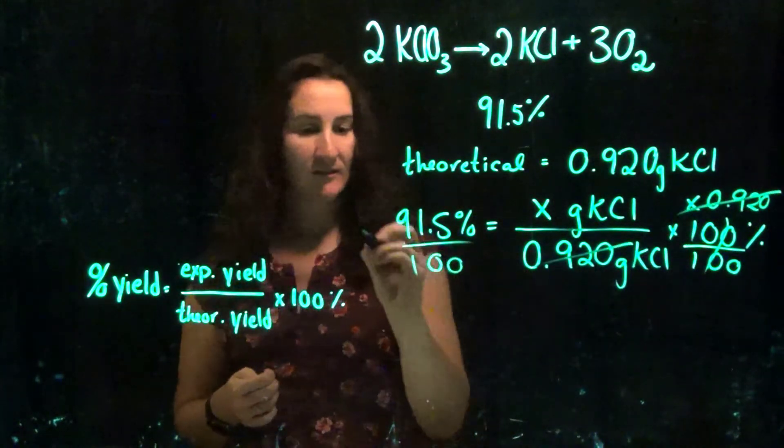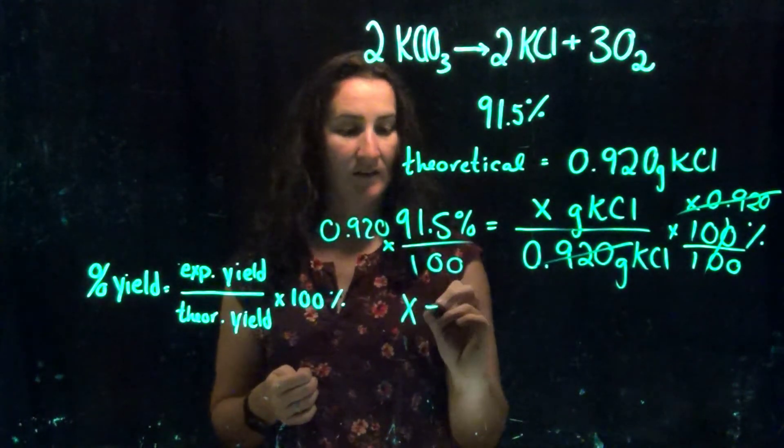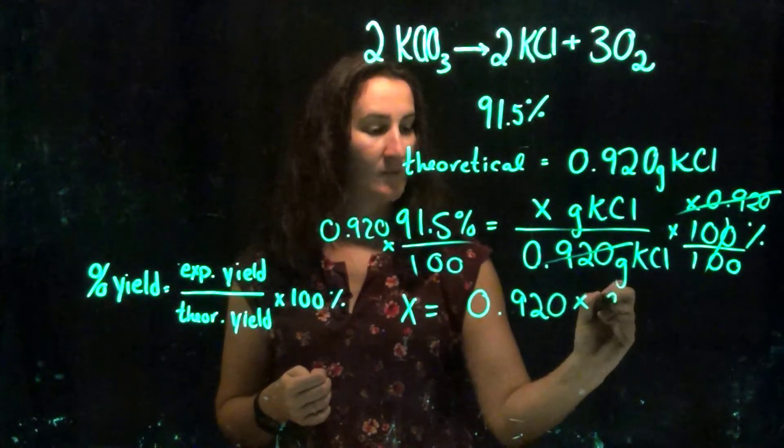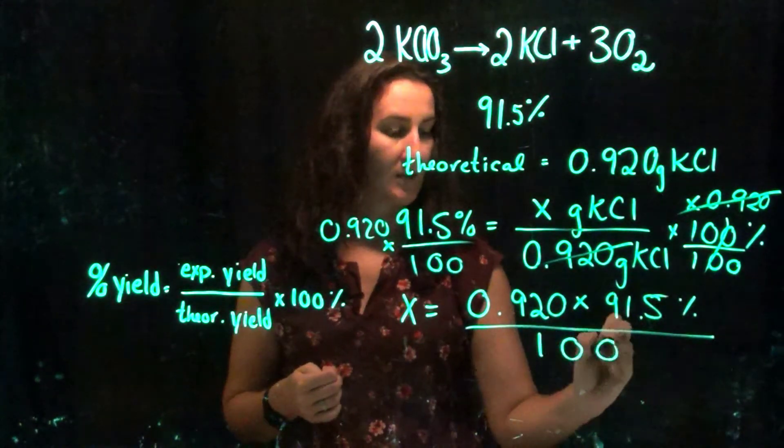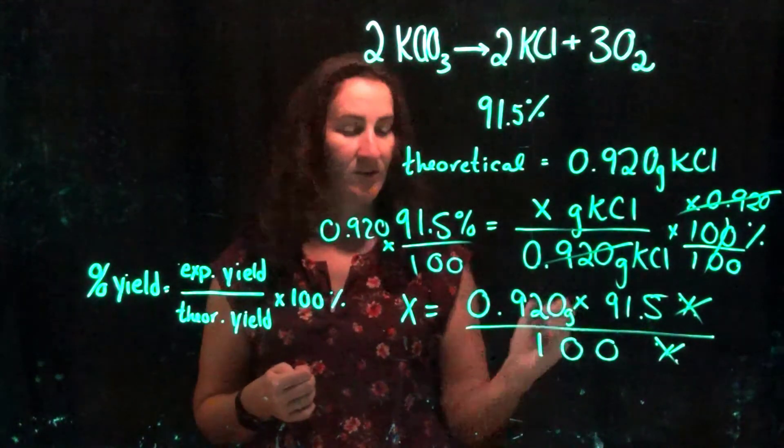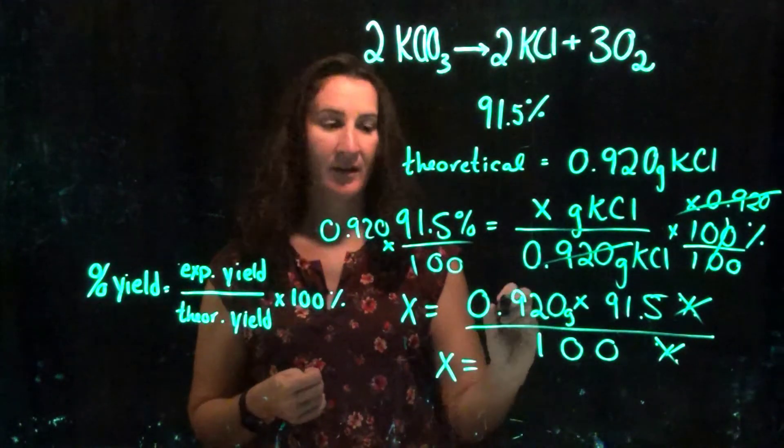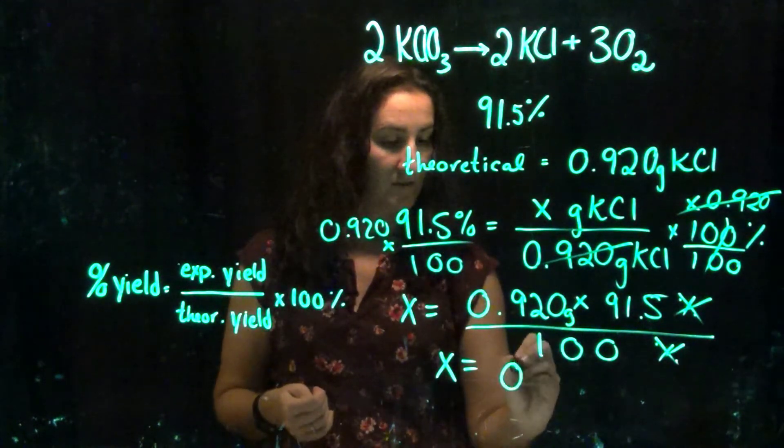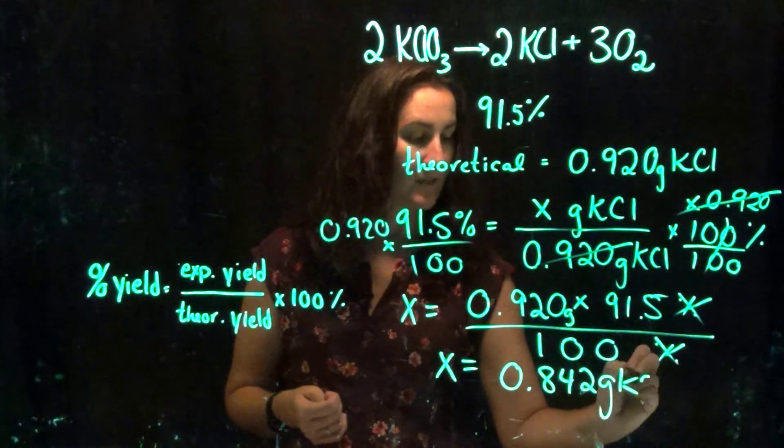So that's going to cause those to cancel, and that's going to be over here. So in this case now, x equals 0.920 times 91.5 with units of percent, over 100 with units of percent. So my units are canceling. These still have their units, so grams is still my remaining unit. And now my final answer, once I multiply 0.920 times 91.5 divided by 100 is going to be 0.842 grams of KCl.